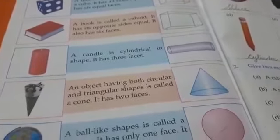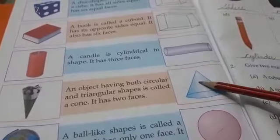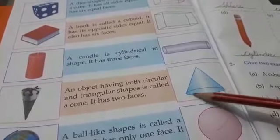Wo object jiska circular aur triangle dono shape hota hai usko hum cone bolte hain. Ye iska triangle shape hai aur ye iska circular shape hai.